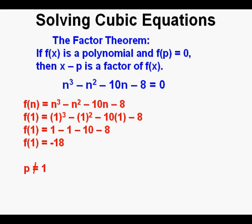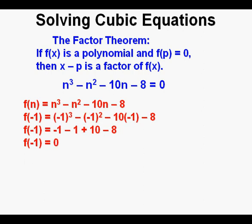We can try f(1), and since f(1) ends up being -18 and not zero, we know that p is not 1. Next, we can try p = -1. So since f(-1) equals zero, we know that p = -1. So we have x - (-1), which equals x + 1 as a factor.